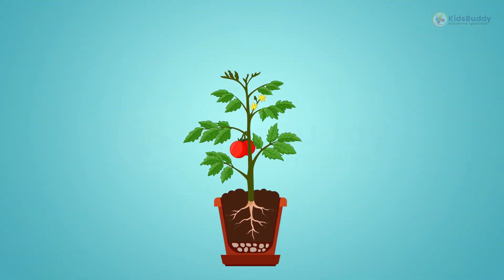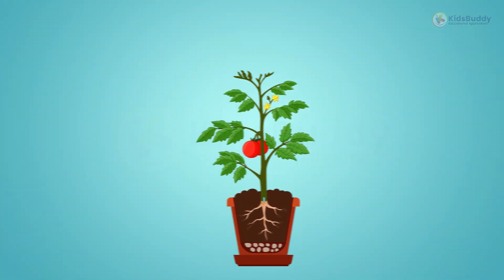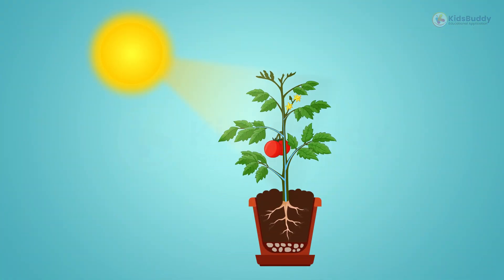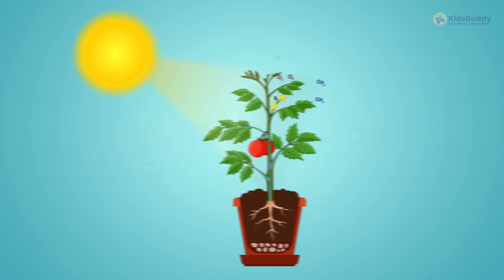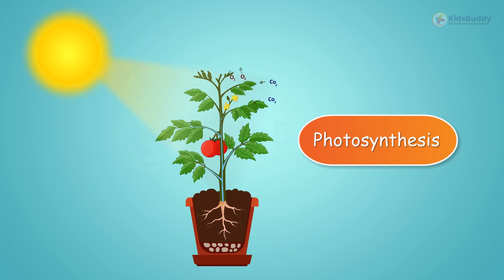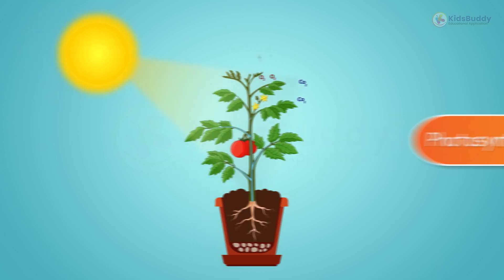Carbon dioxide from the atmosphere is used by plants along with sunlight for photosynthesis. It is a process that converts carbon dioxide into compounds that can be used as nutrition by the plants. In this process, plants release oxygen.